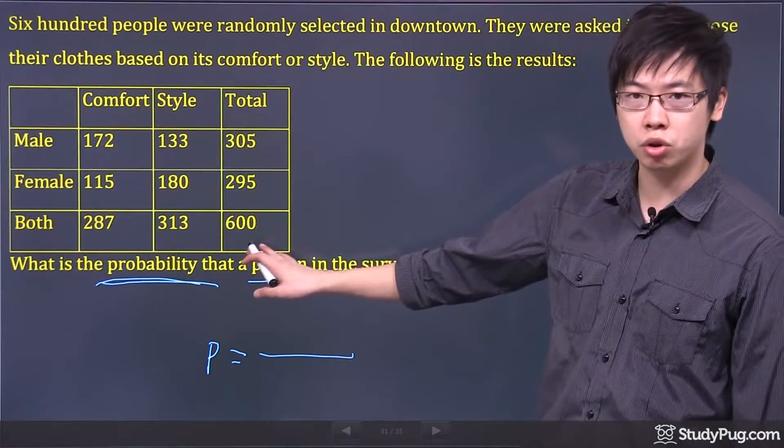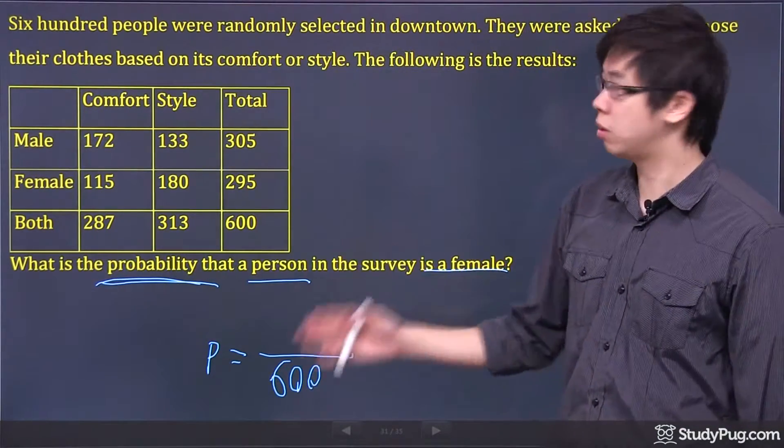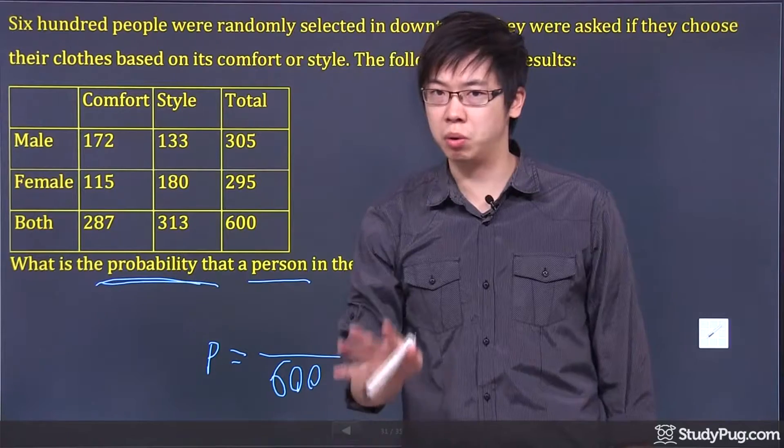Let's start with the total population at the bottom, which is 600 people that taken the survey. It says right at the bottom, 600 people in total.